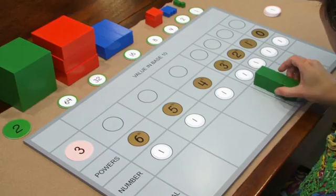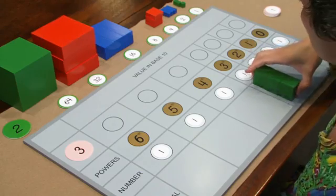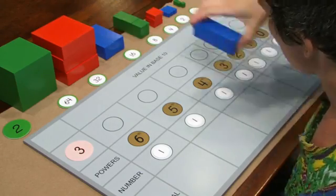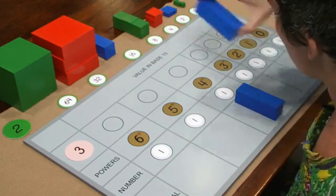1, 2, 3. I'll exchange these for the next higher category, represented by the larger blue rectangular prism.